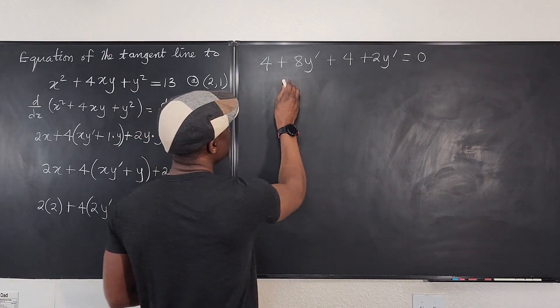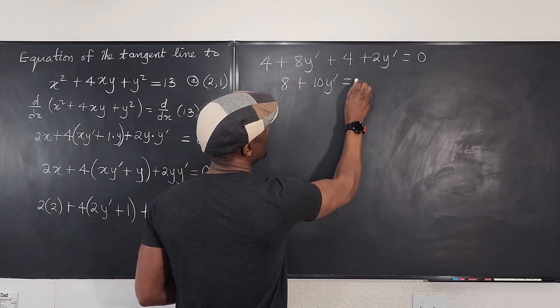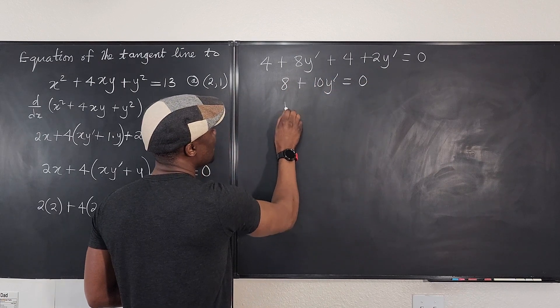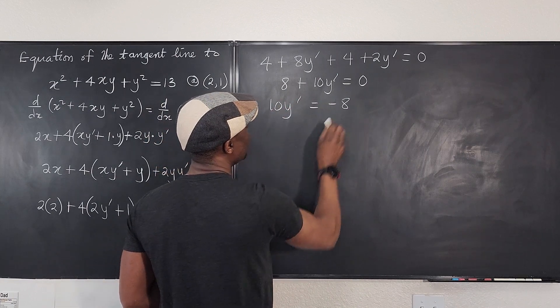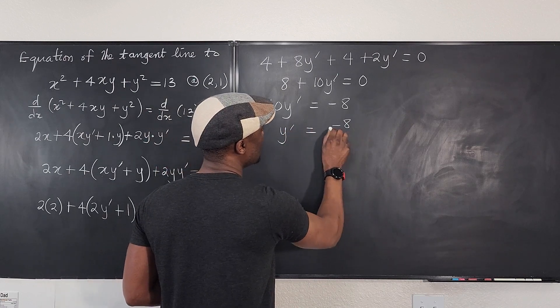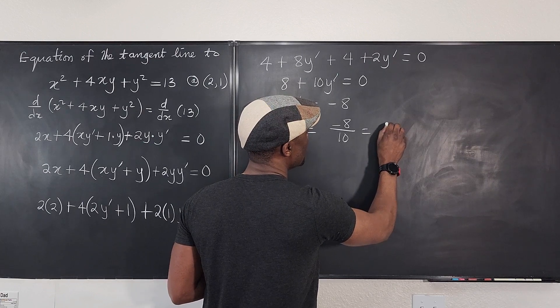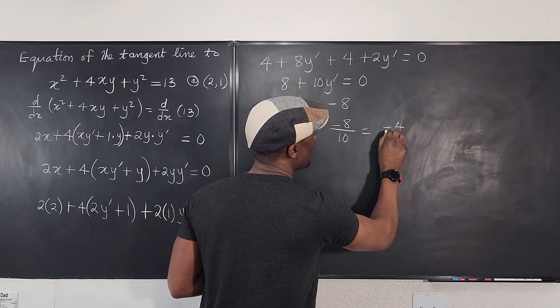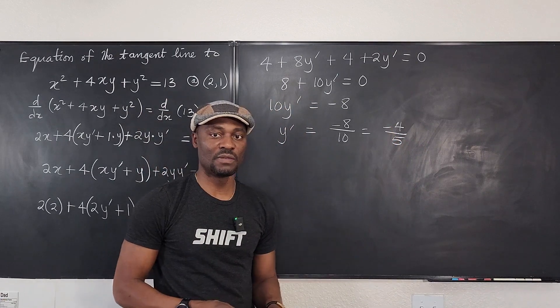Now what do we have? We have 8 plus 10y prime is equal to 0. That means that 10y prime equals negative 8, which means y prime is equal to negative 8 over 10, which is equal to negative 4 over 5. So this is your y prime. y prime is negative 4 over 5.